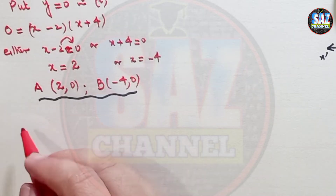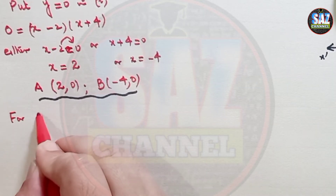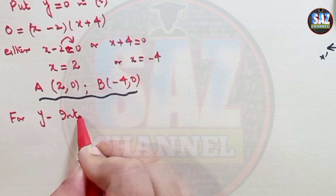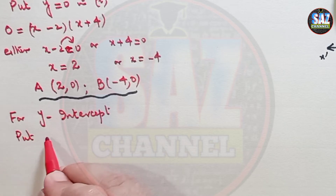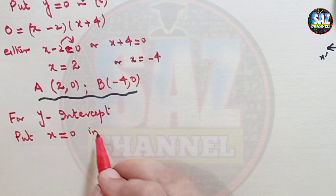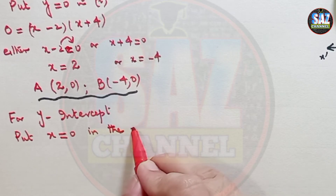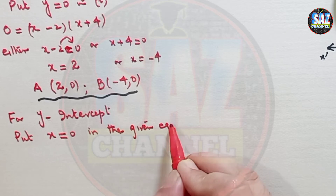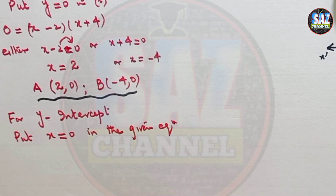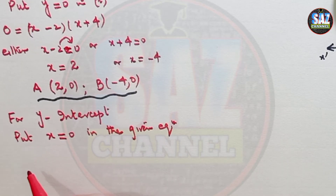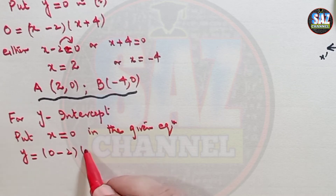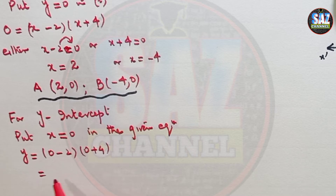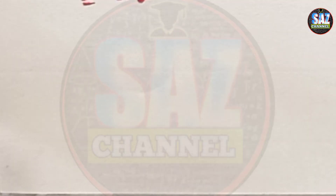Now we have to find the y-intercept. For y-intercepts, put x equals 0 in the given equation. Always give such references in your working so the examiner can understand easily. When I put x equals 0, I get (0 − 2)(0 + 4), which is minus 2 multiplied by 4, equal to minus 8. So the y-intercept is −8.